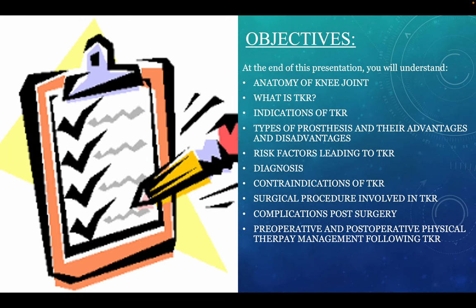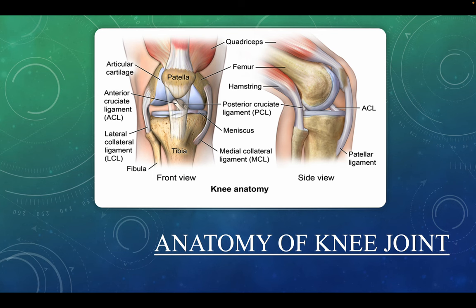Objectives: at the end of the presentation you will understand the anatomy of the knee joint, what is TKR, the indications and contraindications of TKR, the types of prostheses and their advantages and disadvantages, how to make a diagnosis, the risk factors leading to TKR, the surgical procedures involved, the complications post-surgery, and the pre-operative and post-operative physical therapy management following TKR.